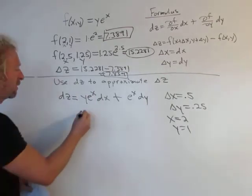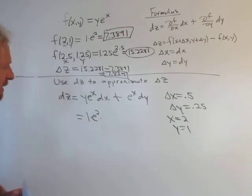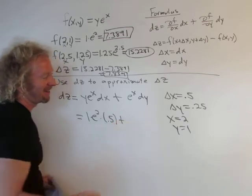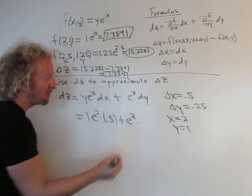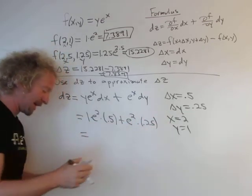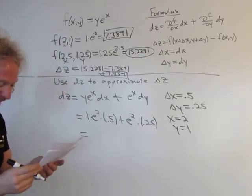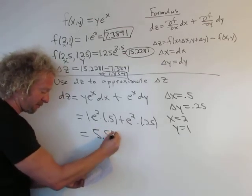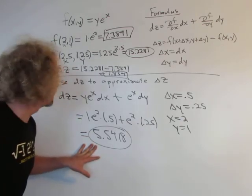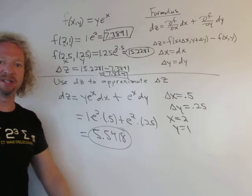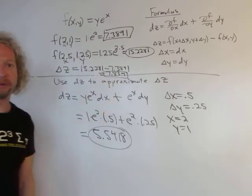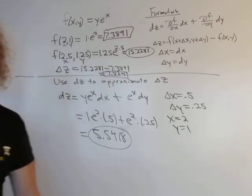So we have 1 times e^2, and dx is 0.5. Plus e^2, and dy is 0.25. If you put this in your calculator, I got 5.5418. So this is the approximation of the change in z. This is the actual change in z—not a very good approximation in this case. But I wanted to do an example to show you how to do it. It's not hard, but you have to know where everything goes. I hope that made sense. Thank you, bye.